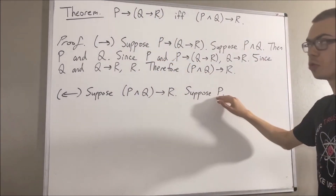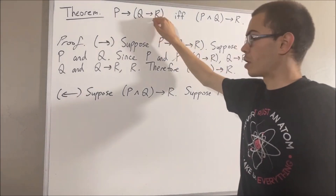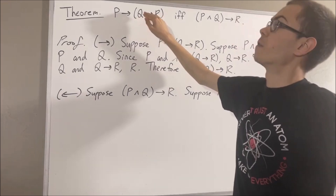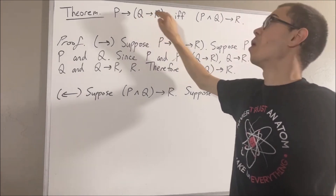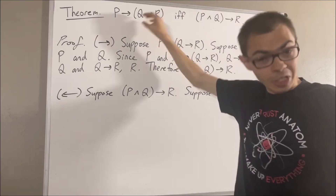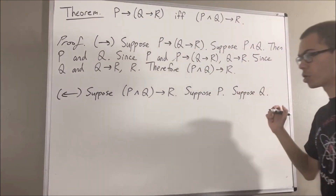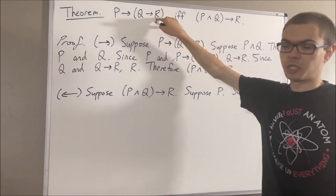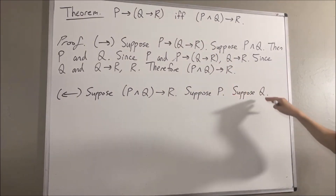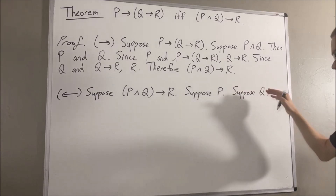Under the assumption that P is true, we want to show if Q is true, then R is true. So we want to prove that under the assumption Q is true, R is true. So let's suppose Q is true. From here, we want to show that R must then be true. Well, since P is true and Q is true, we have that P and Q is true.